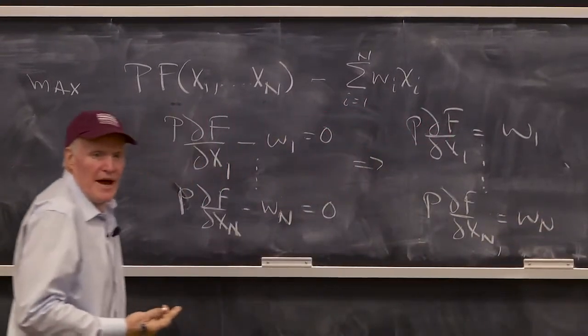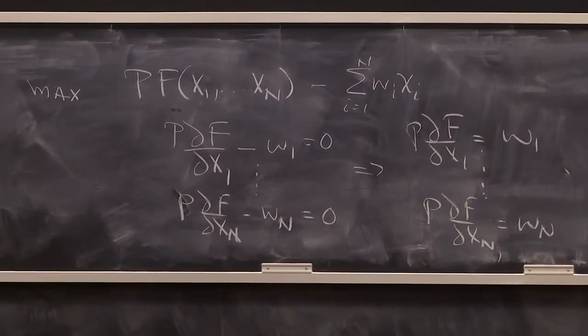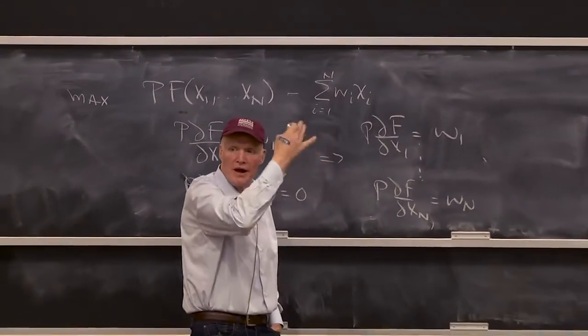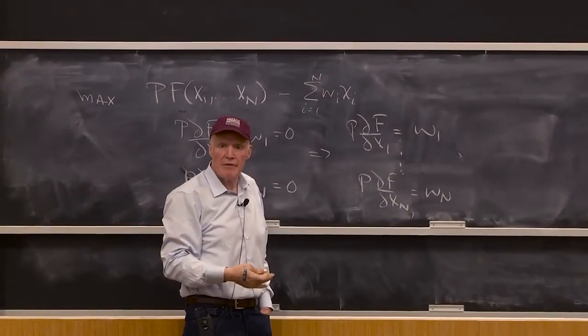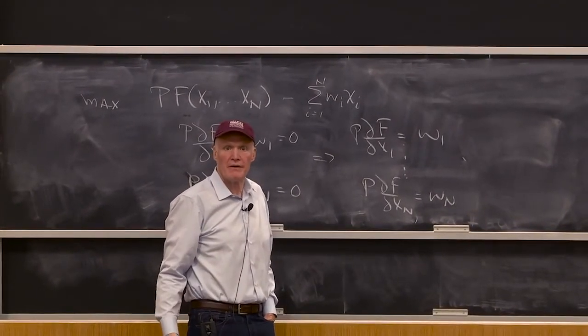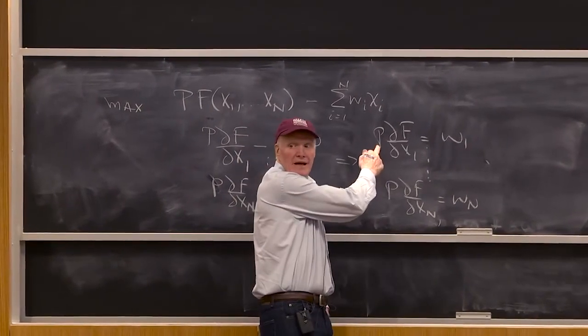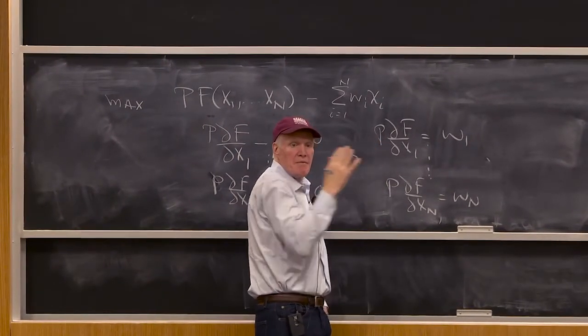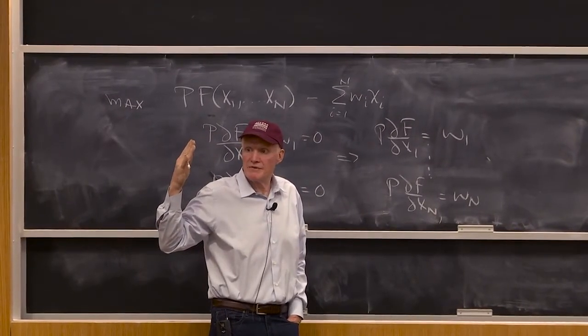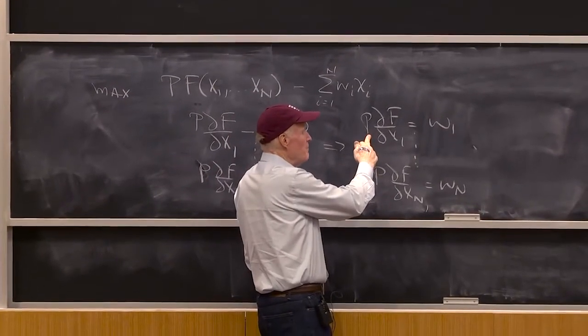These look a lot like what we had in the consumer problem. That is, it's pretty much the same idea, except we don't have that multiplier lambda. That is, we don't have that multiplier on those prices, and why don't we have that multiplier? What's taking the place of that multiplier? It's P. It's P, because remember, lambda was the marginal utility of income. It was how much utility you could get for income. P is the price of output.